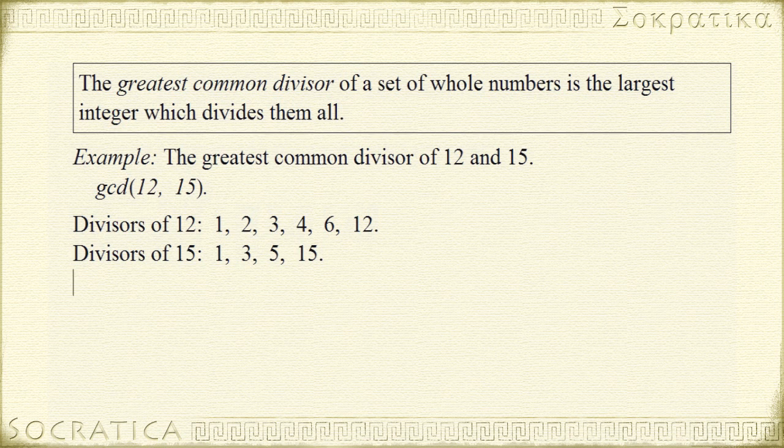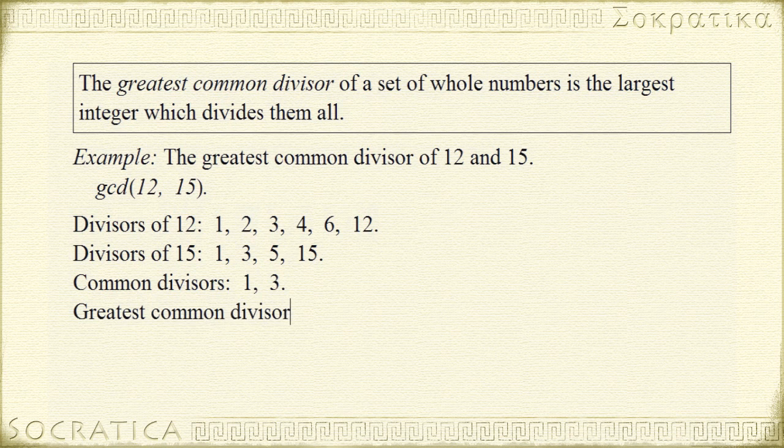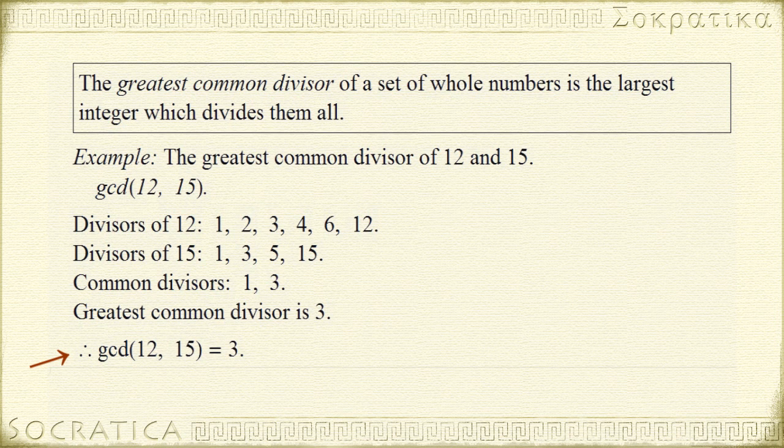So now let's see which divisors they have in common. One divides both of them, and the next one we see is 3 divides both 12 and 15. But other than 1 and 3, there's no other divisors in common. So the greatest common divisor is the largest common divisor, which is 3. Therefore, the GCD of 12 and 15 is 3. These three little dots are the mathematical way of writing the word therefore. So this means therefore, the greatest common divisor of 12 and 15 is 3.